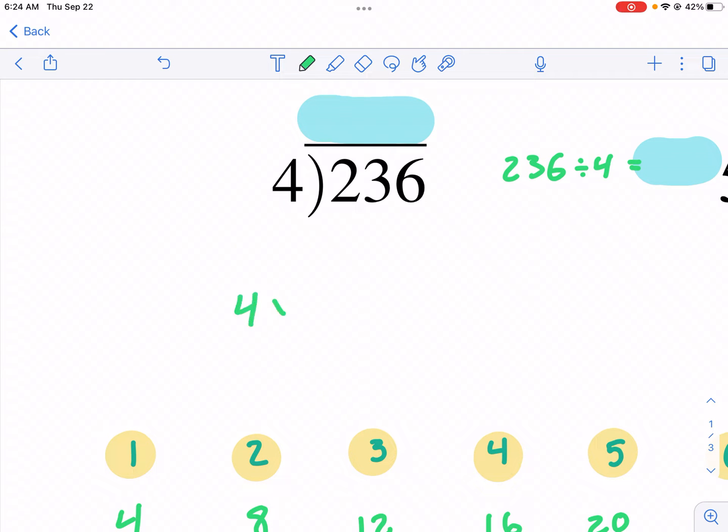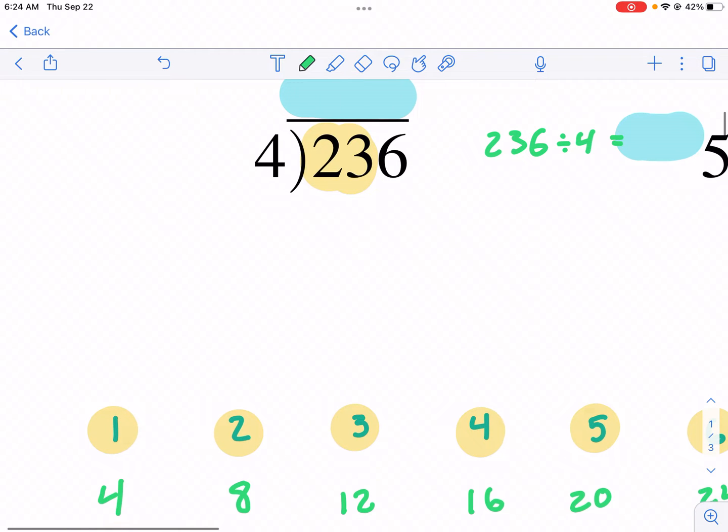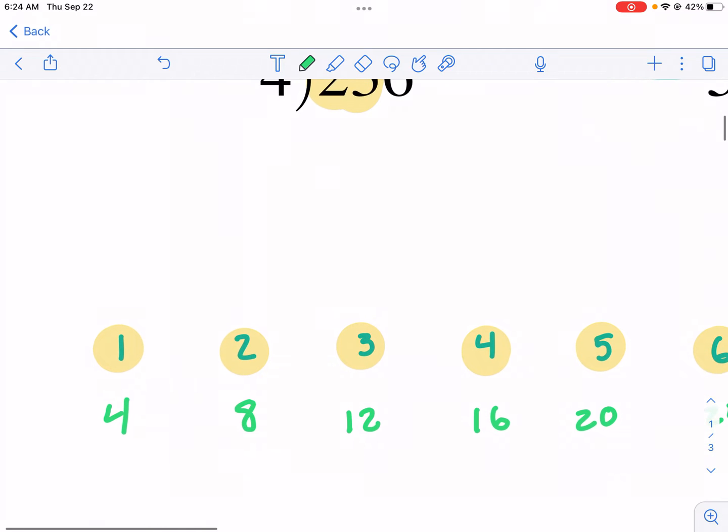If we look here at 4 times 1, we see that we're already bigger than 2. So guess what? We can't put 4 into 2, and that makes sense. We can't multiply 4 times something to equal 2. It's just not happening. 4 is too big. So what happens is we need to move on to the next number, the next digit.